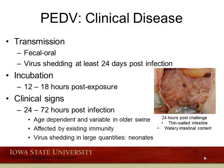Transmission is fecal-oral, with viral shedding based on experimental infections being at least 24 days post-infection. In field cases, that may vary much longer based on the amount and timing of infection. Incubation is typically 12 to 18 hours post-exposure, with clinical signs observed 24 to 72 hours post-infection. This can vary depending on the age of the animal and may be affected by pre-existing immunity. Gross lesions include very thin-walled intestines due to destruction of the villi, also containing watery intestinal contents.